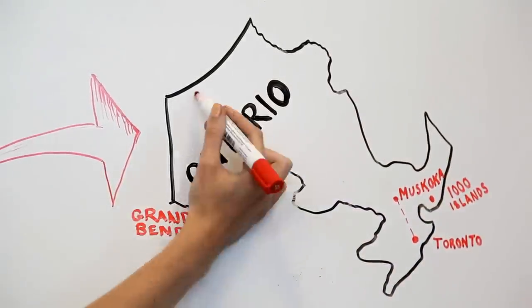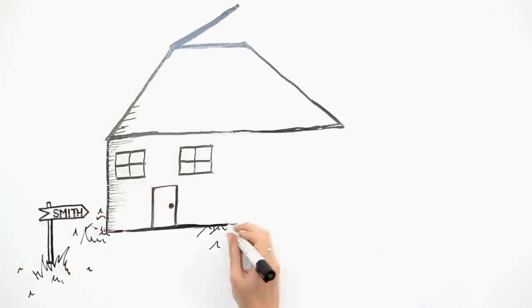Muskoka might be the household name, but we want to connect you with all the cottaging options available. So what exactly are you looking for? Two bedrooms? Four?